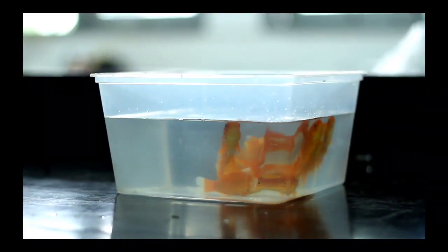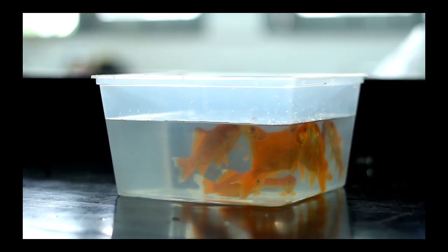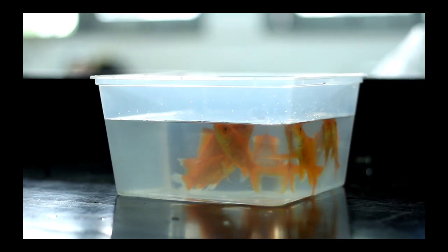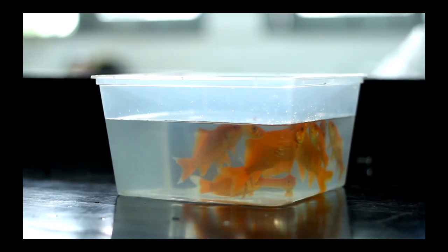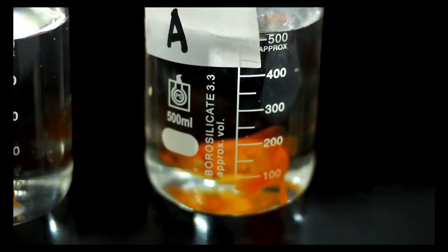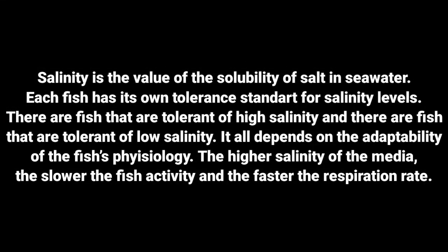Fish are a group of animals that have different physiological mechanisms from land animals, because it is related to their living habitat in the aquatic environment. The aquatic environment has an osmotic pressure with the cell environment in the fish body, so that in order to survive, fish must adapt to prevent excess or lack of water and maintain a balance of ions in the body. Each fish has its own tolerance standard for salinity levels — some are tolerant of high salinity and some of low salinity, depending on the adaptability of the fish physiology.